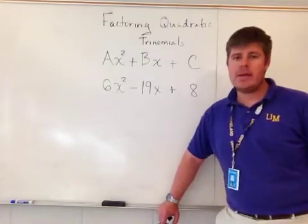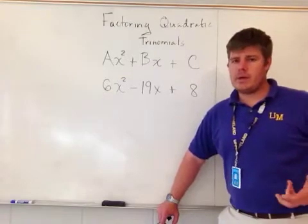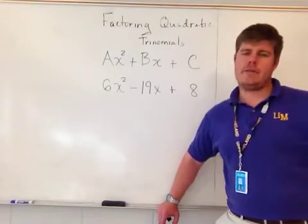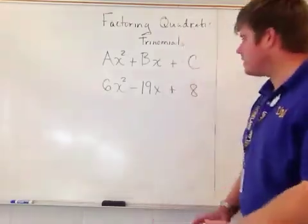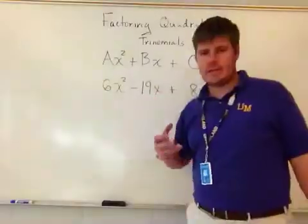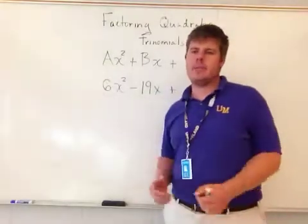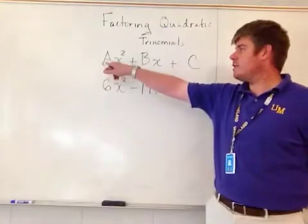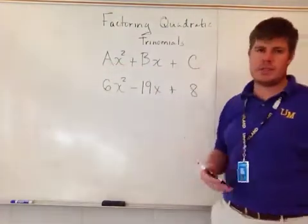The AC method is only going to work if you can find factors that will allow it. AC, as implied, means A times C. In algebra, AC means the coefficient of x squared times the constant.